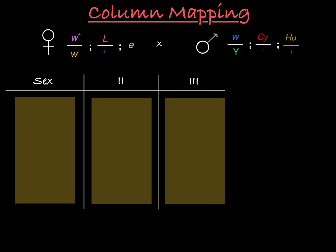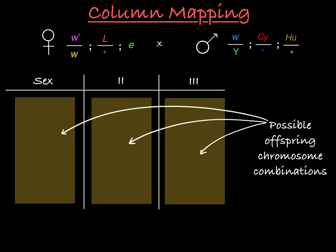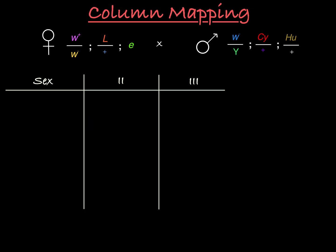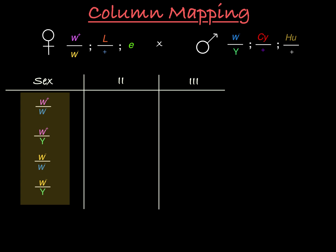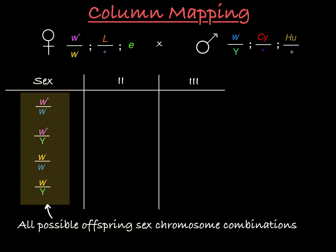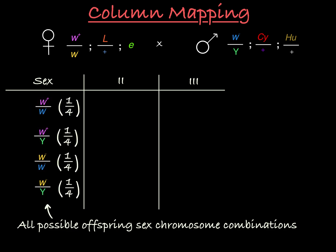In each column, we're going to list the possible offspring chromosome combinations. We can pair the female W plus X chromosome with the male W minus X chromosome or the male Y chromosome, and we can pair the female W minus X chromosome with the male W minus X chromosome or his Y chromosome. This column shows all of the possible sex chromosome combinations for the offspring of this cross. Based on the law of segregation, each of these options has an equal chance of occurring, so they all show up one quarter of the time in the offspring.